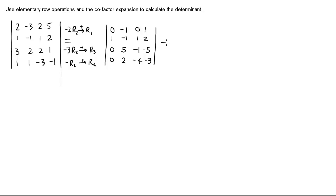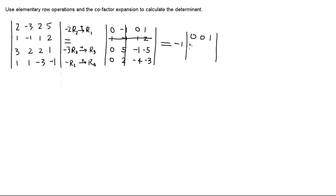Now we can use the cofactor expansion. Look at how many zeros we have in the first column — how nice. We start from the first entry: positive, negative. So the cofactor expansion gives a negative sign, and one times a smaller determinant. We can cross out that column and that row. Then we have zero, zero, one; zero, negative one, negative five; and zero, negative four, negative three.